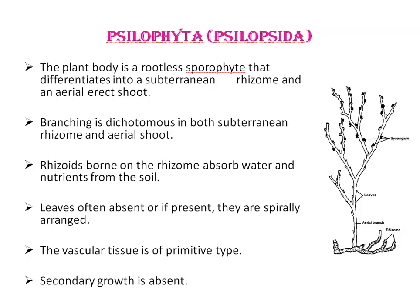Now I will tell you some common features of all four divisions. Starting with Division Psilophyta: the plant body is a rootless sporophyte differentiated into a subterranean rhizome and an aerial erect system. As seen in Psilotum, a member of Division Psilophyta, you can see the aerial shoot system and rhizome. Branching is dichotomous in both the subterranean rhizome and aerial shoot.